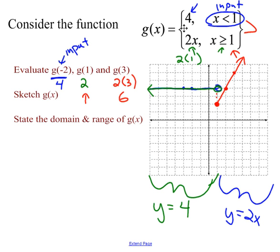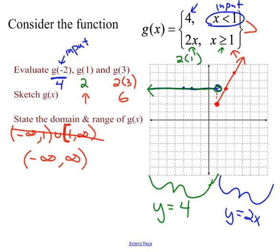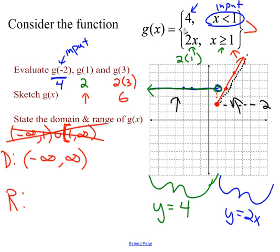Now I want domain and range. For domain, you could write negative infinity to 1 union 1 to infinity, but since every x has a y-value, the domain is simply negative infinity to infinity. For range, looking at the full graph, the lowest y-value is 2. From there I can hit every number up to infinity, so my range is 2 to infinity.